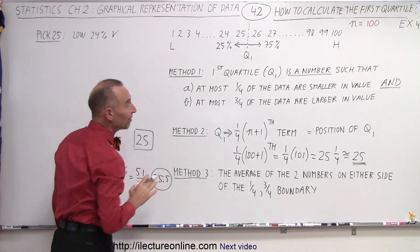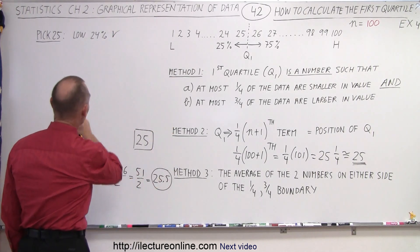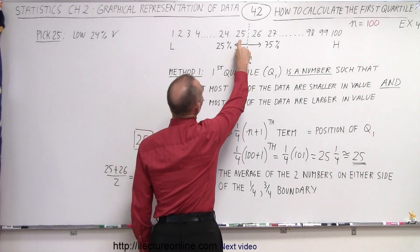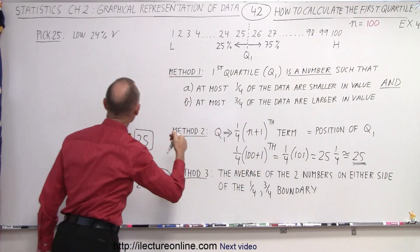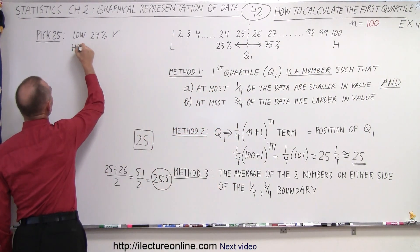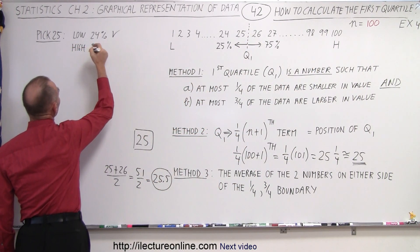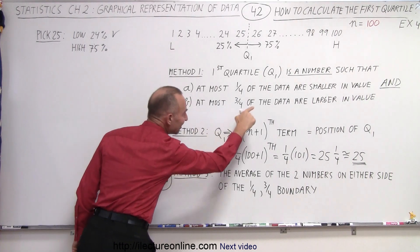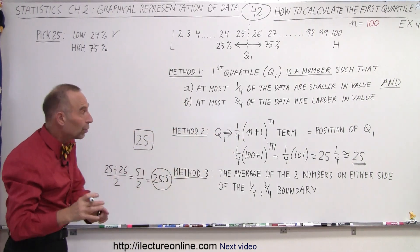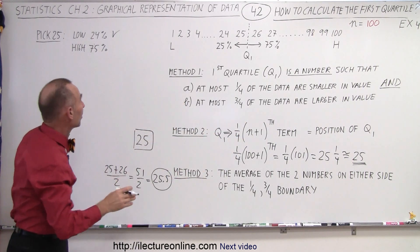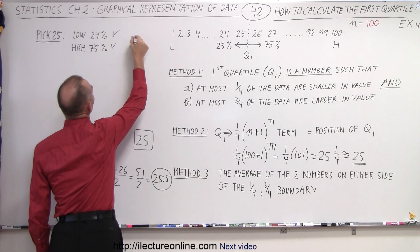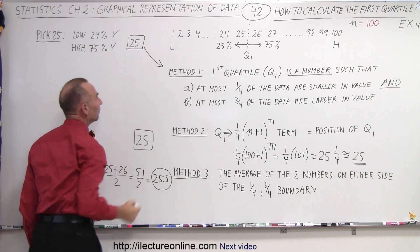So it meets that condition for the pick of 25. For the other rule: to the right of 25 we have 75%, which is exactly the limit allowed. On the high side we have 75%, and that falls right inside what we're allowed — not more than 75%, and 75% is okay. So 25 meets both conditions and is a good pick for method 1.